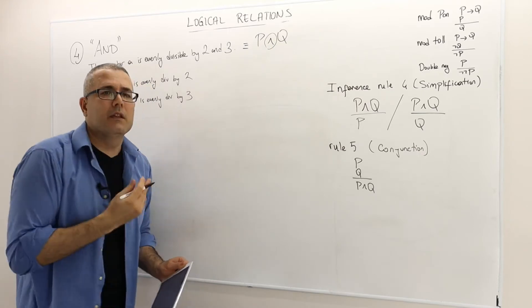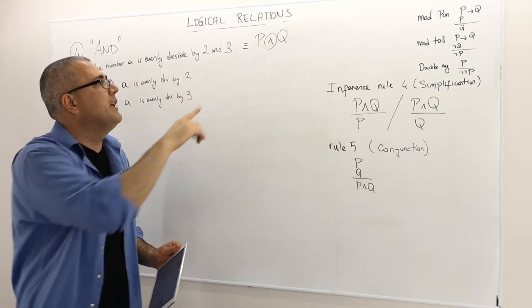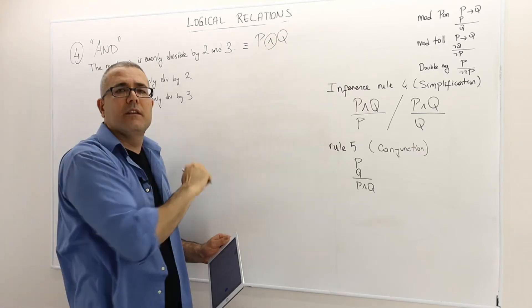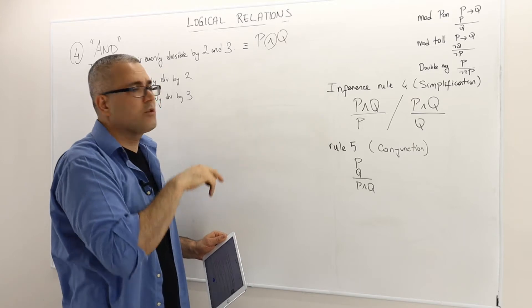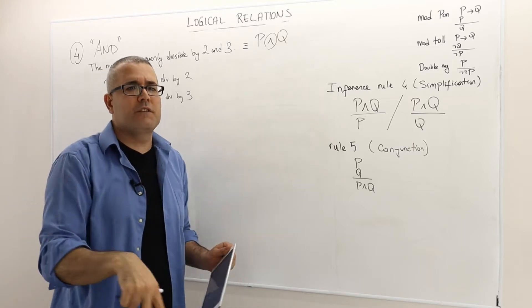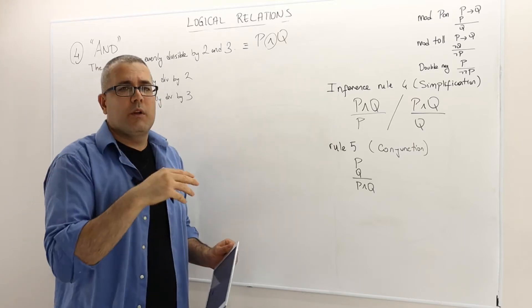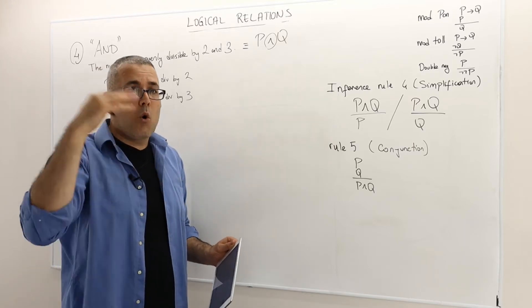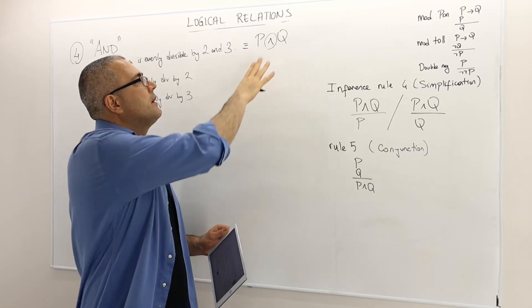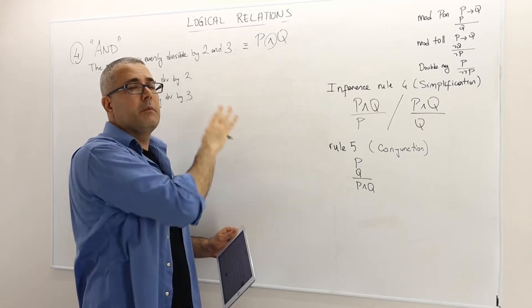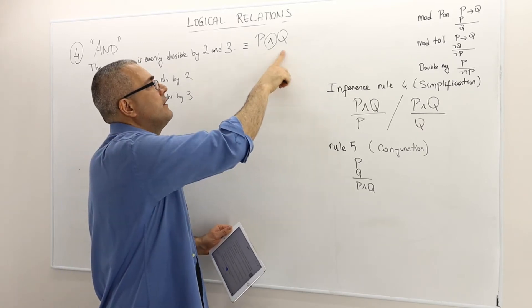This is a new symbol that we use — it means AND. It's kind of a reversed V. Later we're going to learn OR, but this symbol means AND. So P and Q.